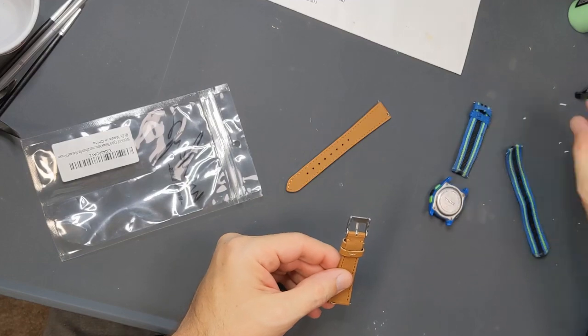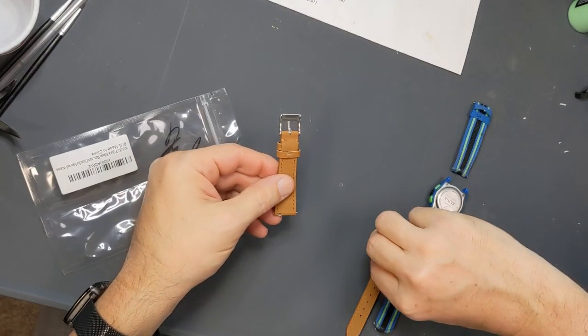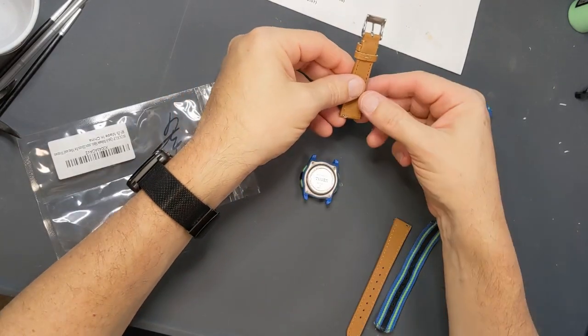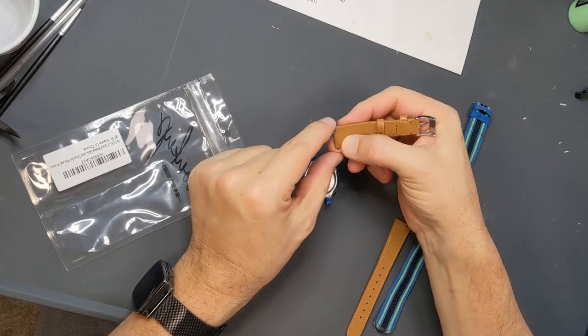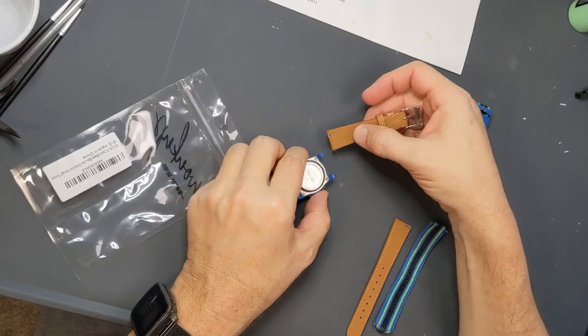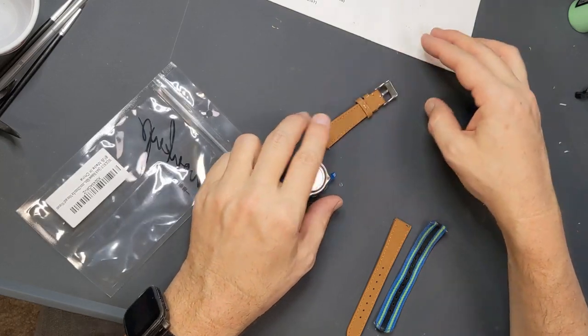So if you recall, we had it like this to begin with. So this guy is going to be on the bottom, this guy will be on the top. And these little levers that actuate the pins to go in and out will be facing your wrist. You can also check and see this guy here is in the right orientation for the watch band.